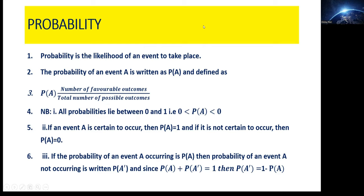When something is not likely to take place we say the probability is zero. But if you are certain something is likely to happen — for example, that the sun is likely to shine — then the probability is one. So probability simply falls between zero and one. If you are certain something is likely to happen the probability is one; if you are certain it's not likely to happen the probability is zero.